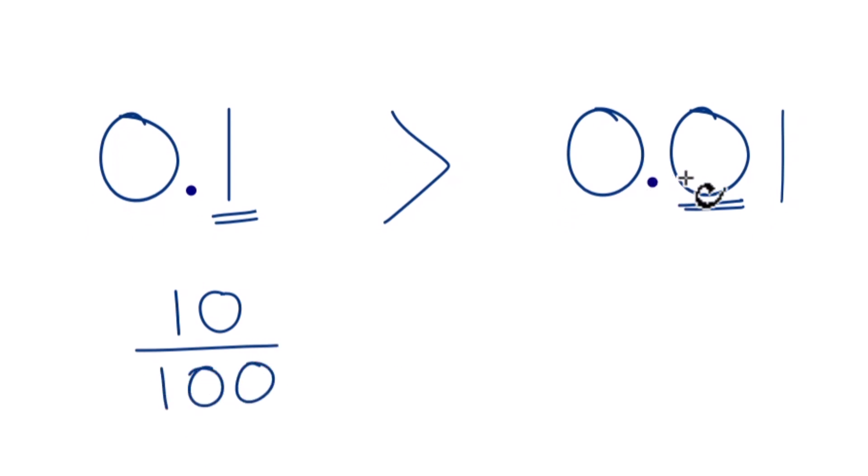If you convert 0.01 to a fraction, you get 1 over 100. And then you can compare the numerators because these denominators here are the same.